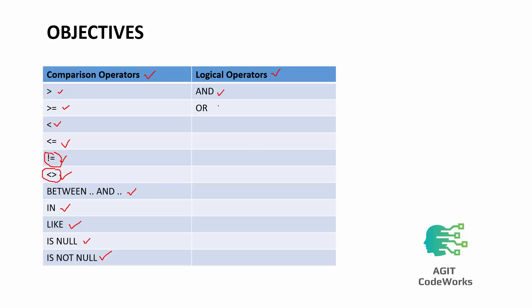Next we have logical operators: AND and OR. These are used when you want to compare multiple conditions. For example, if your boss asks you to retrieve every staff member who earns less than fifteen thousand dollars, is not an IT programmer, and does not earn any commission — those are multiple conditions. The AND and OR operators handle evaluating more than one condition.